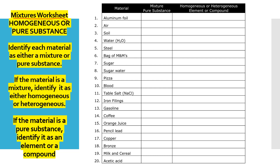Mixture Worksheet — Homogeneous or Pure Substance. Instruction: Identify each material as either a mixture or a pure substance. If the material is a mixture, identify it as either homogeneous or heterogeneous. If the material is a pure substance, identify it as an element or a compound.